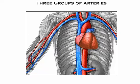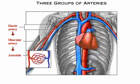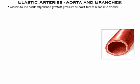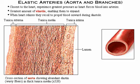In terms of relative size and function, arteries can be divided into three groups: elastic arteries, muscular arteries, and arterioles. Elastic arteries are closest to the heart, where they experience the greatest pressure. As the heart forces blood into them, they have the greatest amount of elastin, enabling them to expand. When the heart relaxes, they recoil to propel blood onward during diastole. In this photomicrograph of a cross-section of the aorta, note the abundant elastin visible as wavy fibers in the thick tunica media.